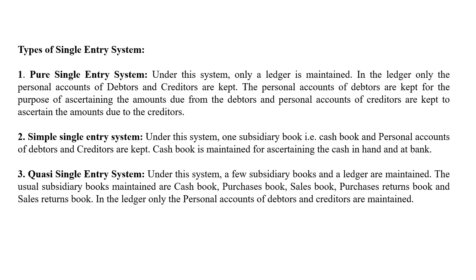So in the pure single entry system, only ledger accounts — that is debtors and creditors accounts — are maintained. In the simple single entry system, along with debtors and creditors, a cash book is maintained. These are the important types of single entry system.